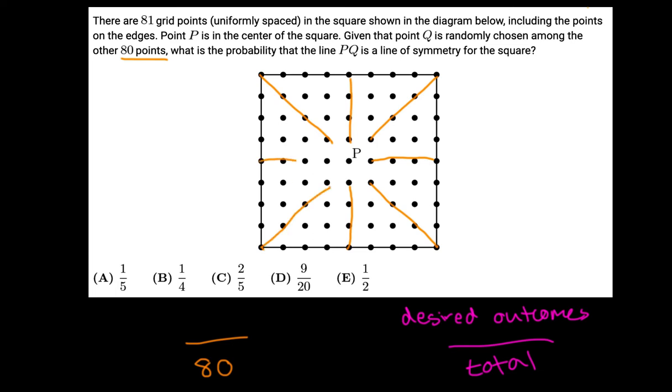okay, so now we have the number of lines, and the reason why I'm not including P in each of these lines, you might be curious, is because it says that Q will not overlap with P. It's saying Q will be one of the other 80 points besides P.